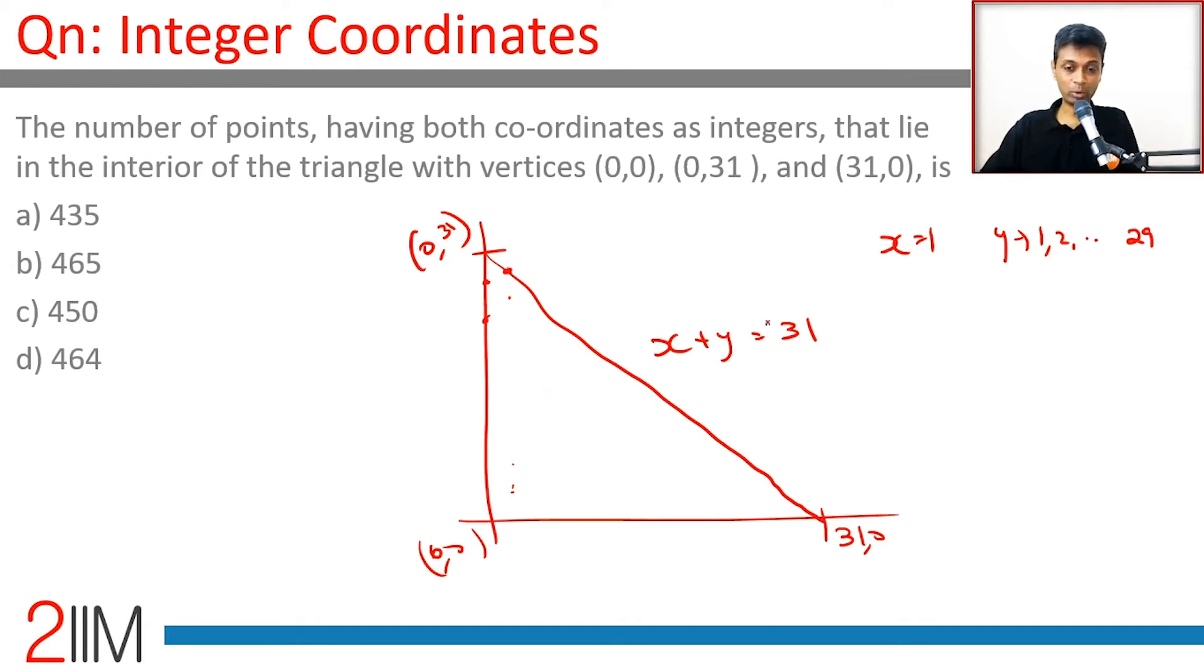So there are 29 points for x equal to 1. For x equal to 2, y can go up to 28, giving 28 points.